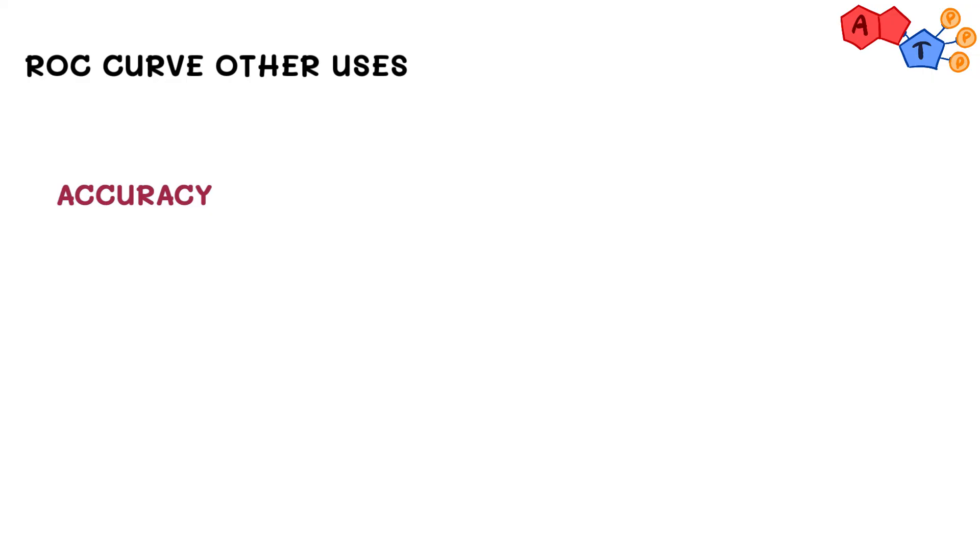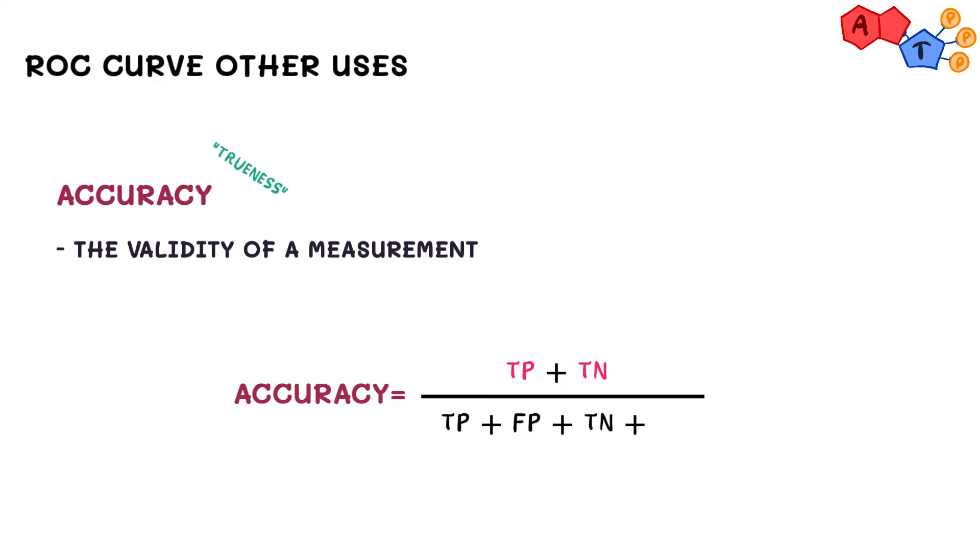Accuracy is an important term and relates to the validity of a measurement. I like to think of it as the trueness of a measurement to help remind me of the formula, which is true positive plus true negative over true positive plus false positive plus true negative plus false negative. Pretty much everything goes in the denominator while only the true ones go into the numerator.